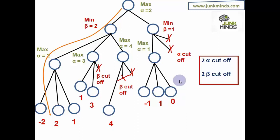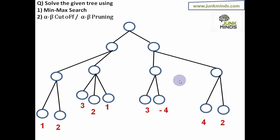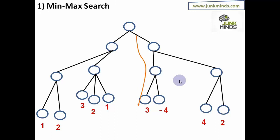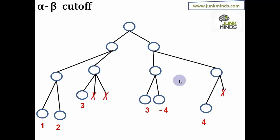In examinations, they will typically give you a tree and ask you to evaluate it using both methods — alpha-beta cutoff as well as minmax search. I'll leave you with one more practice problem to try on your own. On the next slides I'll also give you the solution, but ideally look at the problem, evaluate it on your own, and only then cross-check with the solution. Here it is: the winning path for minmax search is this. For alpha-beta cutoff, the solution gives 3 beta cutoffs and no alpha cutoffs in this case, and the same path comes out as the winning path. Do try this problem on your own.